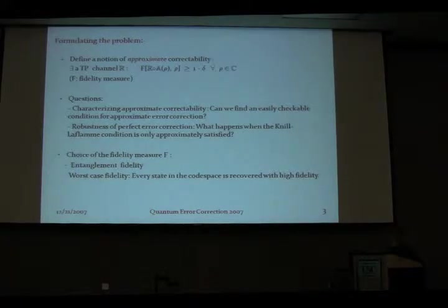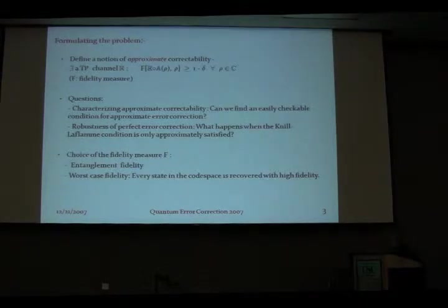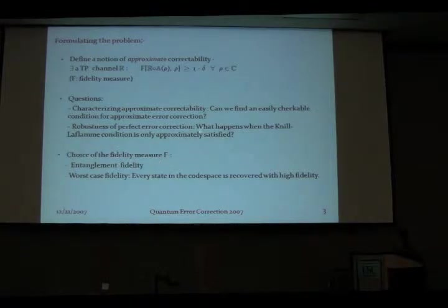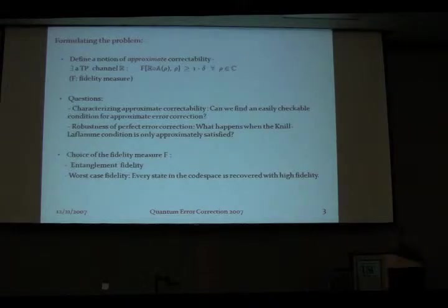Is it still possible to get back the information encoded in the code space with high enough fidelity? Intuitively, we would think the answer is yes. If that is so, what is a good recovery to use? As was pointed out in the first talk today by Peter Shor, one has a choice of fidelity measures: one can formulate this with the entanglement fidelity, or with the worst case fidelity, in which case every state in the code space would be brought back to itself with high enough fidelity.